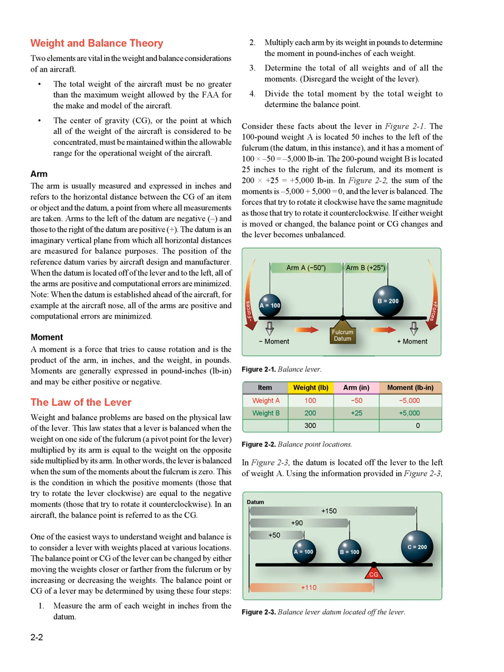In an aircraft, the balance point is referred to as the CG. One of the easiest ways to understand weight and balance is to consider a lever with weights placed at various locations. The balance point or CG of the lever can be changed by either moving the weights closer to or farther from the fulcrum, or by increasing or decreasing the weights.